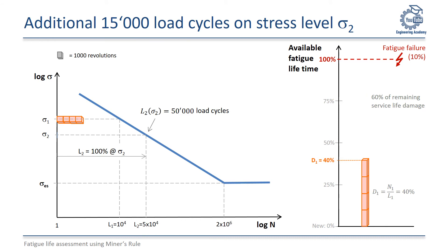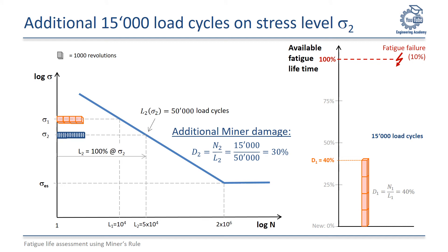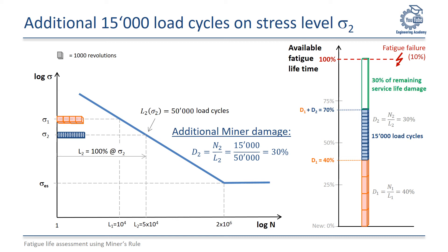Based on this previous damage, we now consider the additional damage accumulation at stress level sigma2. The single service life only at this level is L2 equals 50,000 load cycles. We run 15,000 load cycles, represented here by 15 blue boxes at level sigma2, resulting in an additional minor damage sum of 30%. The cumulative damage after the second load level is then 40% plus 30% equals 70%, so that 30% of the available service life damage remains.